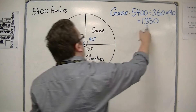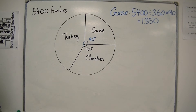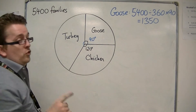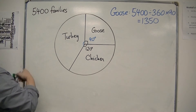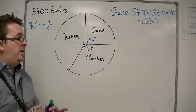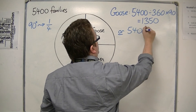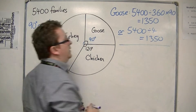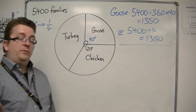5,400 divided by 360 times 90 is 1,350. So there are 1,350 families that are going to have goose. An easier way of calculating this is to know that 90 degrees is clearly one quarter of the pie, so you could have just done 5,400 divided by 4 to get the same answer. Either of these calculations is perfectly fine — it's up to you which you use.